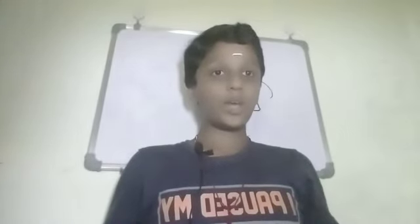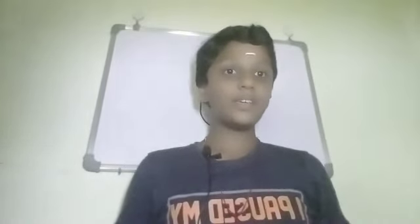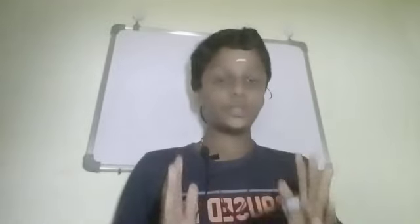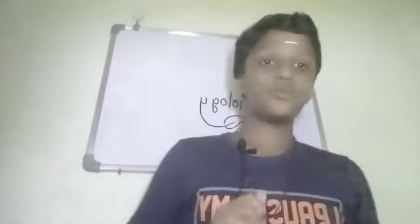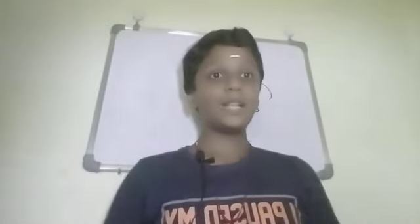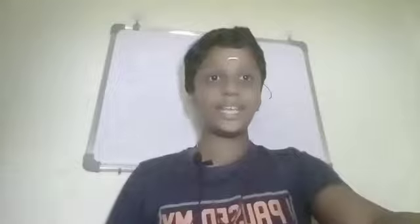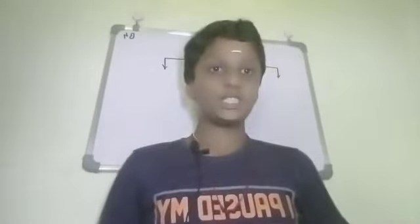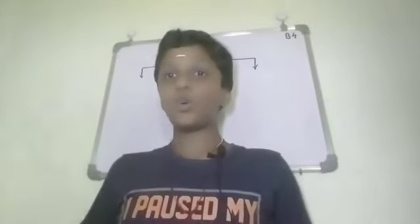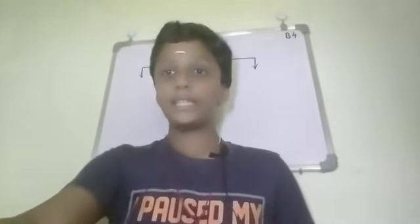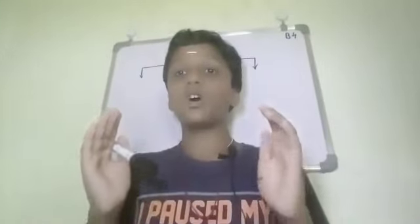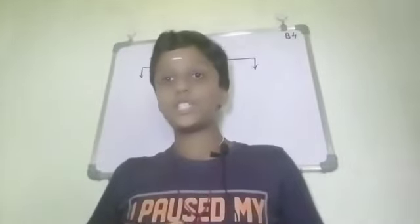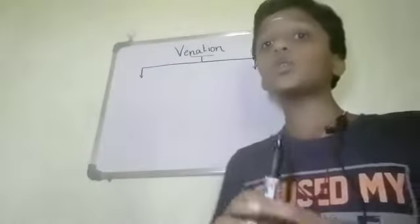Hello friends, welcome back to Dejanta OFS Junior, and today we are looking at our fourth biology class. Today we will be looking into venation. Venation is the arrangement of veins in a leaf. The arrangement of veins in a given leaf is called venation, and venation is of two types.